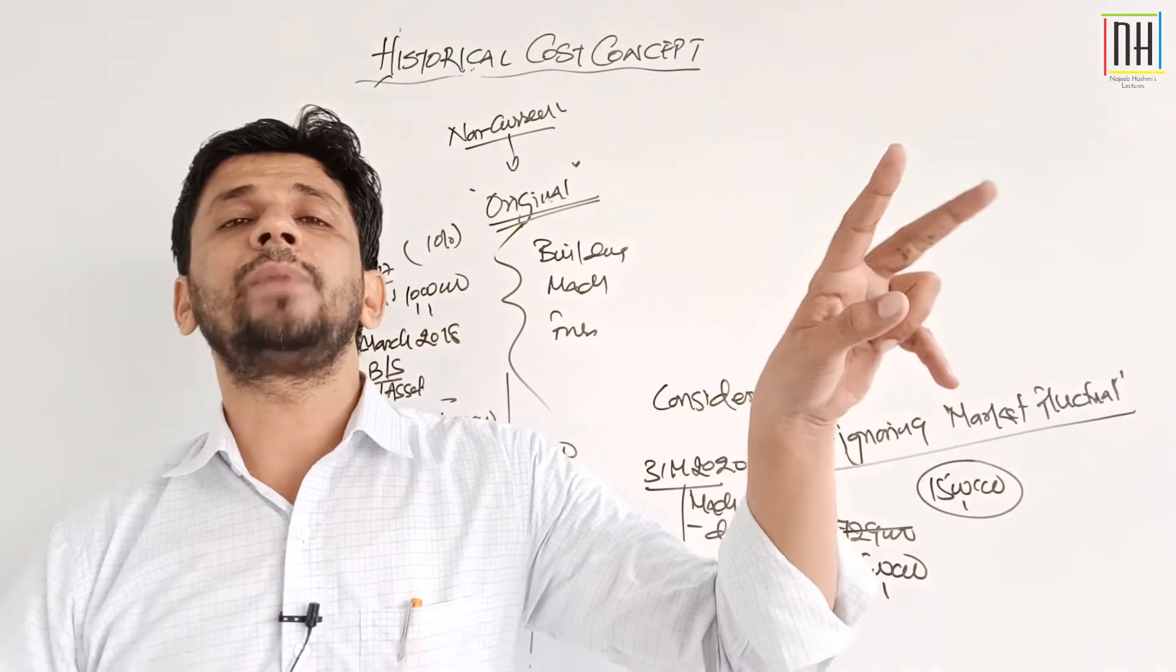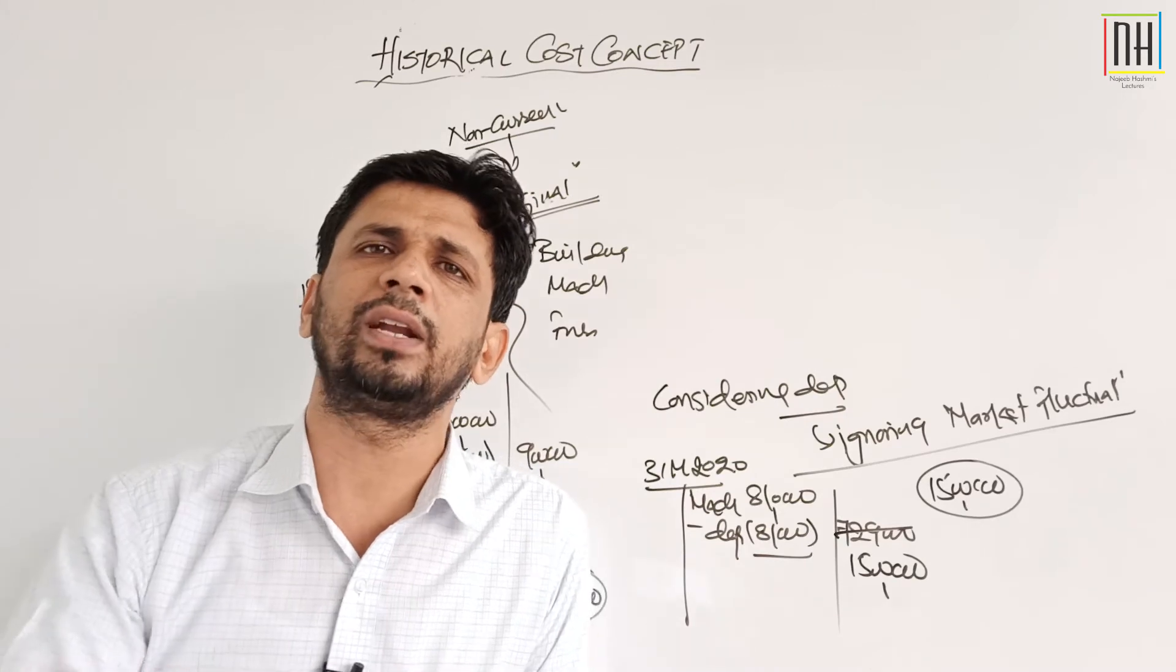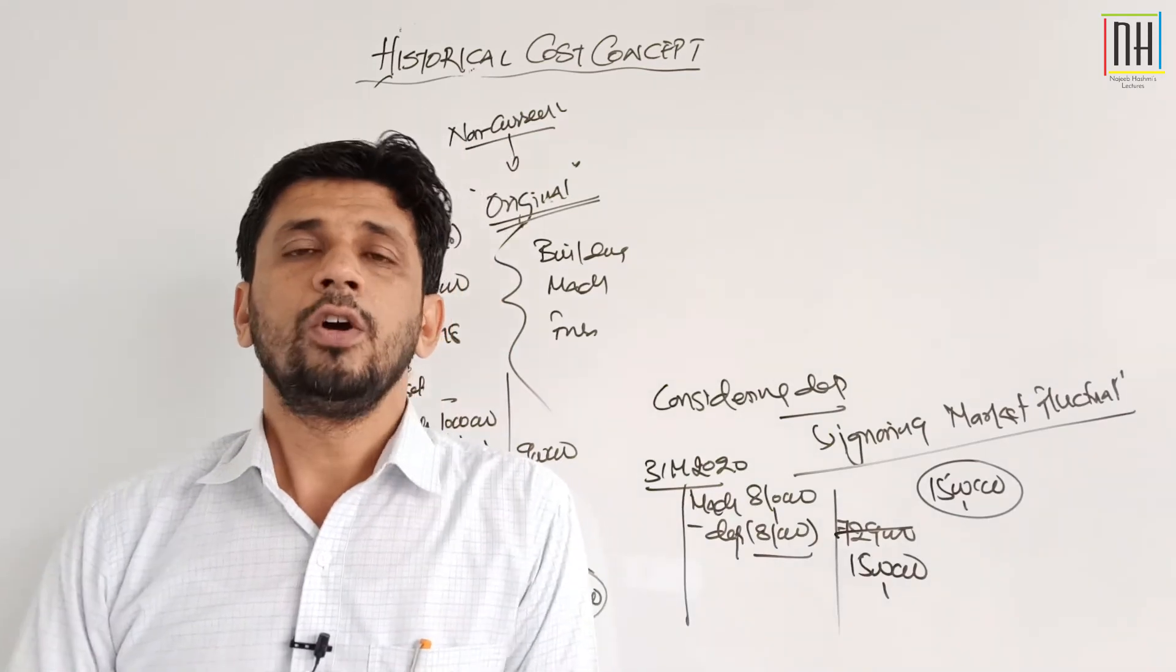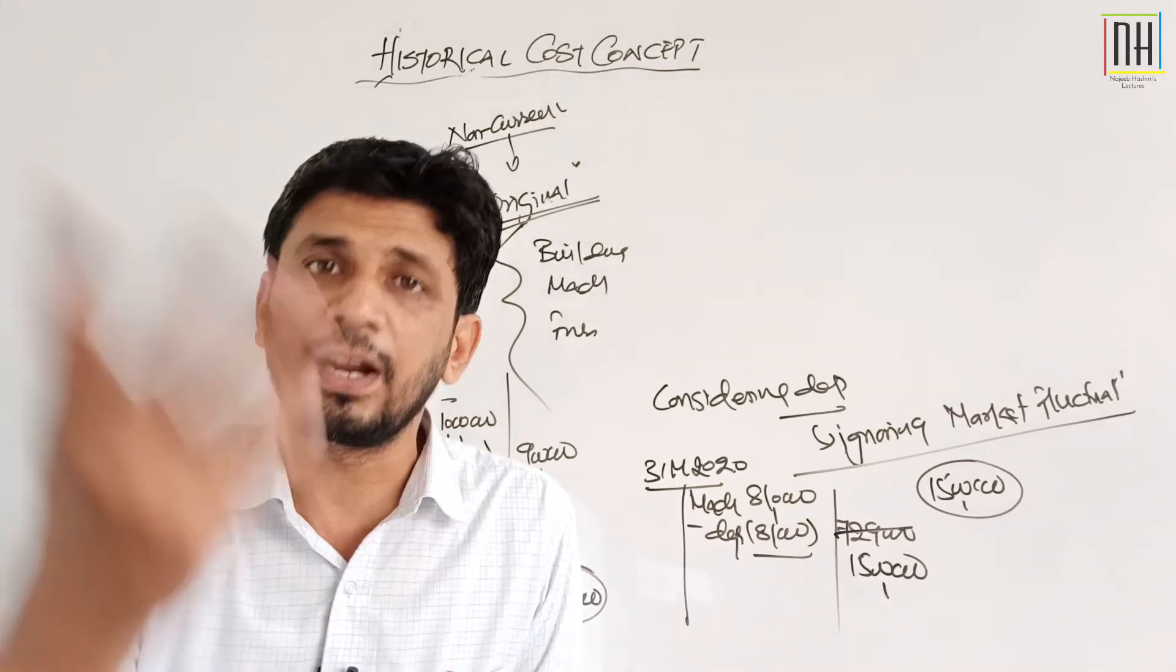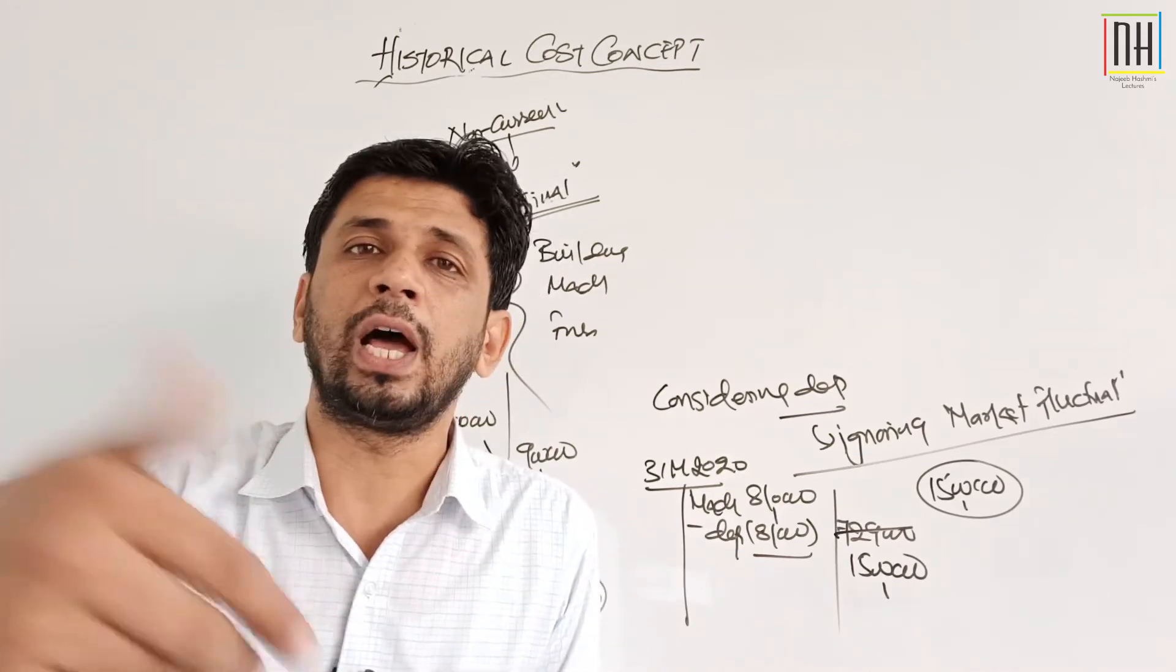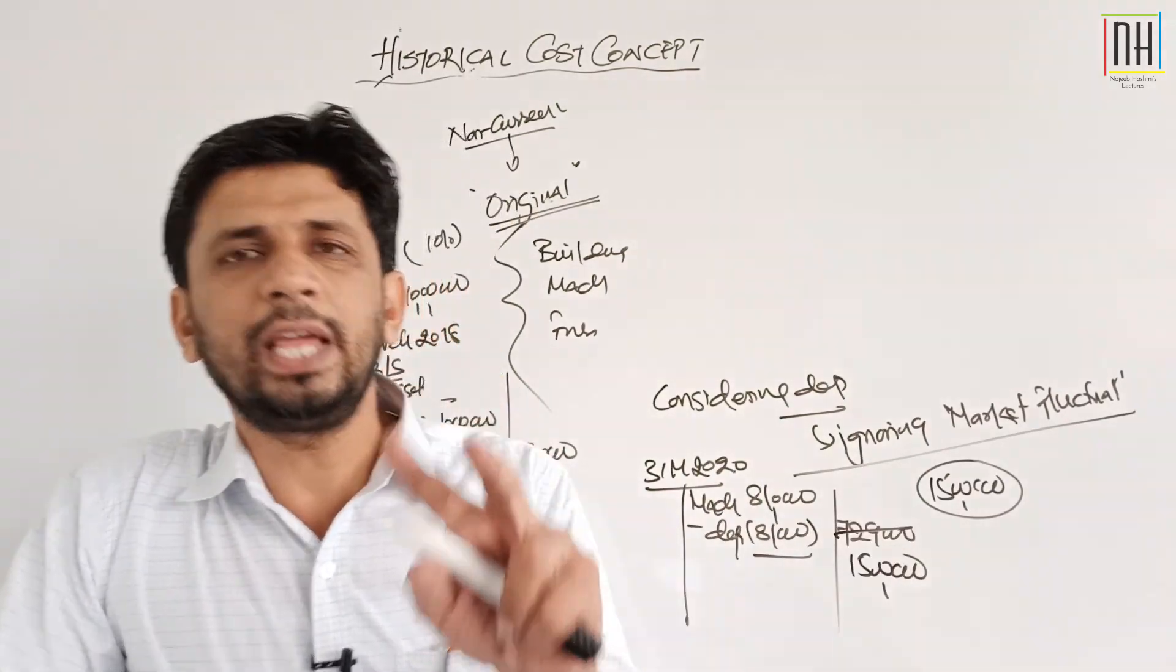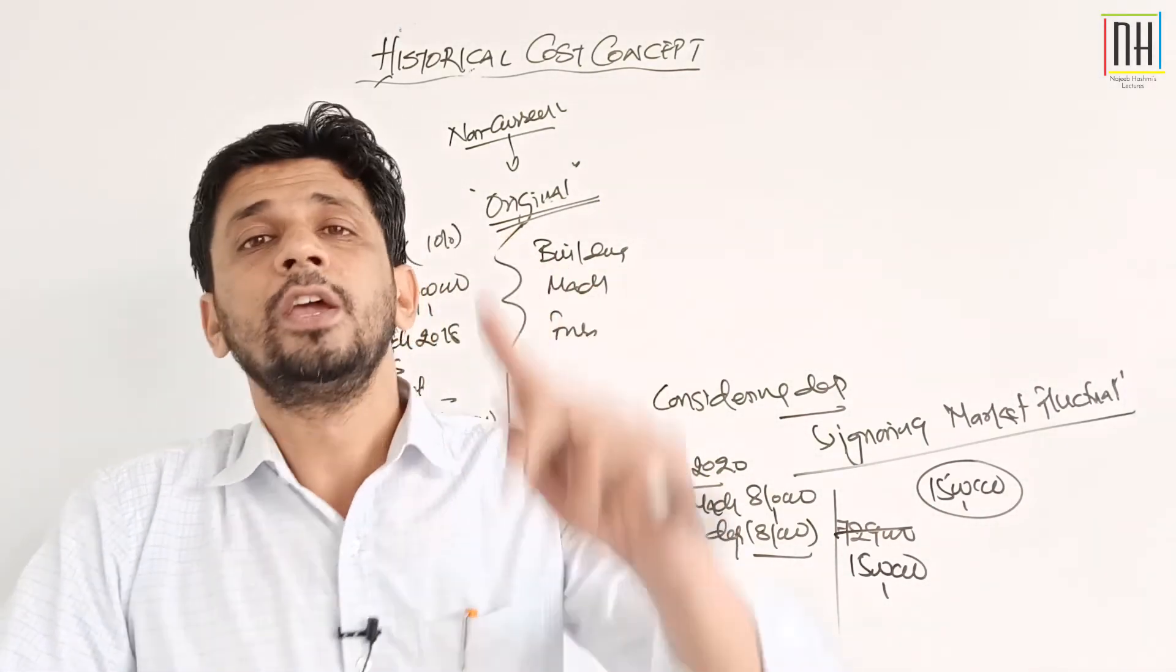Whatever market fluctuation is there - whether it is increase or decrease, doesn't matter - market fluctuations ko aap books of accounts mein record nahi karna hai. Kyunki market fluctuations ko record kar lenge to uska dual aspect, second effect ka handle nahi kar sakenge. Fluctuations in prices ka koi documentary proof nahi hai. There is no documentary proof against that.